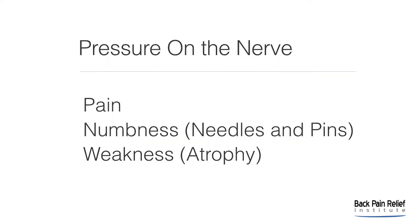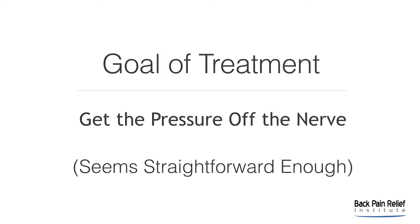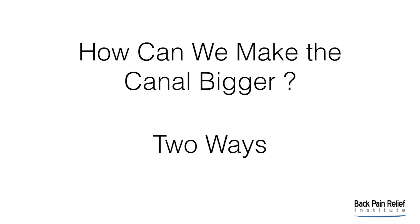Pressure on the nerve causes pain, numbness, needles and pins, and/or weakness or atrophy, such as a foot drop in extreme examples. The goal of treatment is to get pressure off the nerve so blood supply and circulation can be reestablished and the symptoms resolved. Essentially what we want to do is make the canal bigger.